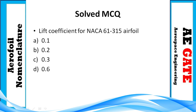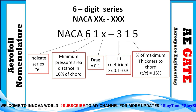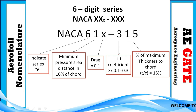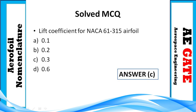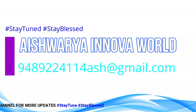MCQ 8: Find the lift coefficient for NACA 61-315 airfoil. From the designation, this is a six-series airfoil. The digit '3' after the hyphen represents the lift coefficient: 3 × 0.1 = 0.3. So the correct answer is option C — CL of 0.3.